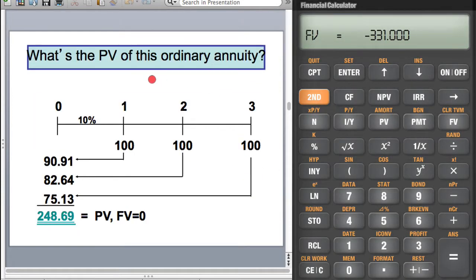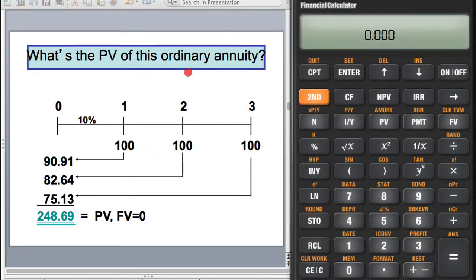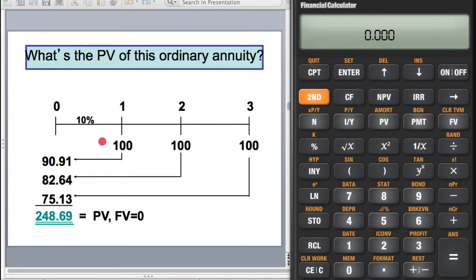The flip side of this is, what's the present value of this ordinary annuity? So now it's like driving the car in reverse. The present value of $100 at the end of one year, but the present value today is going to be less than $100. And that is just a basic fact.